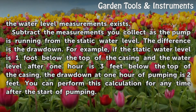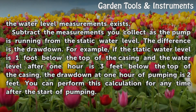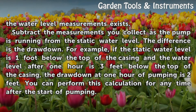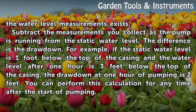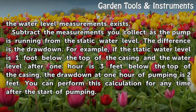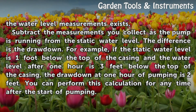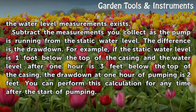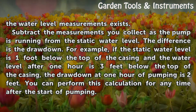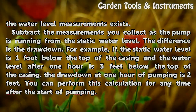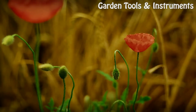Continue to collect water level data until minimal change in the water level measurements exists. Subtract the measurements you collect while the pump is running from the static water level — the difference is the drawdown. For example, if the static water level is 1 ft below the top of the casing and the water level after 1 hour is 3 ft below the top of the casing, the drawdown at 1 hour of pumping is 2 ft. You can perform this calculation for any time after the start of pumping.